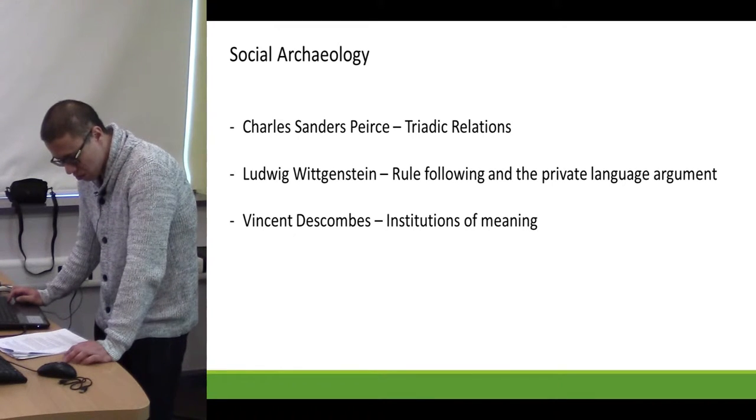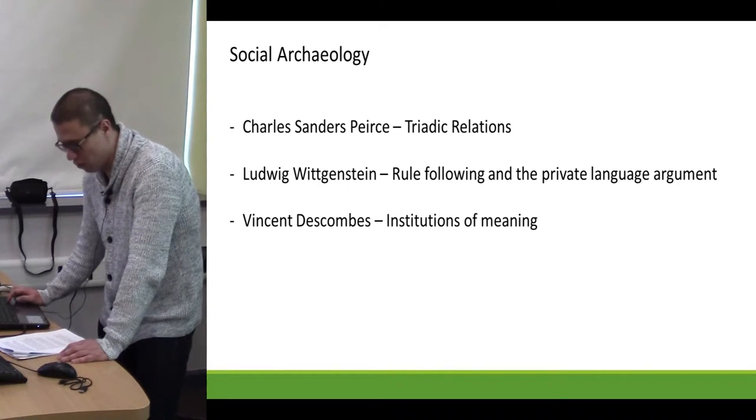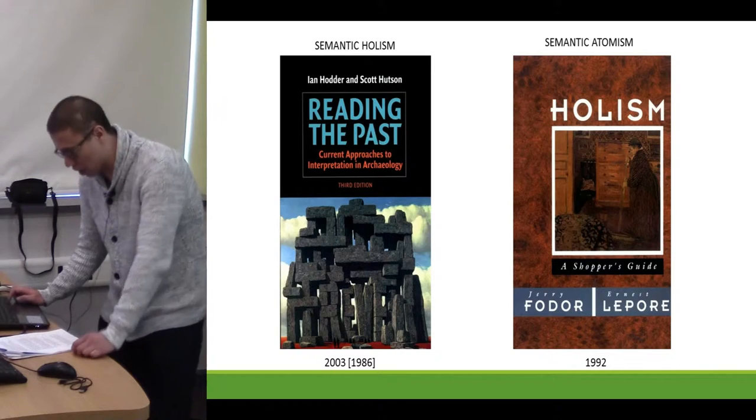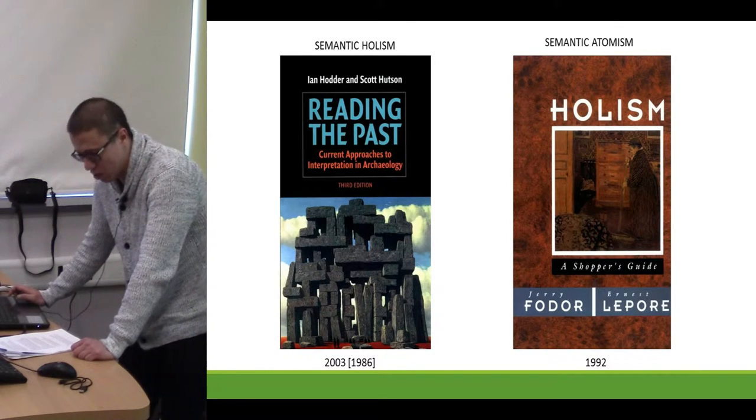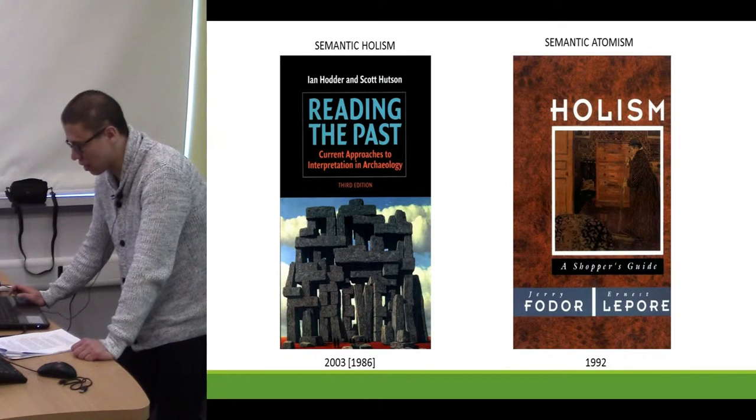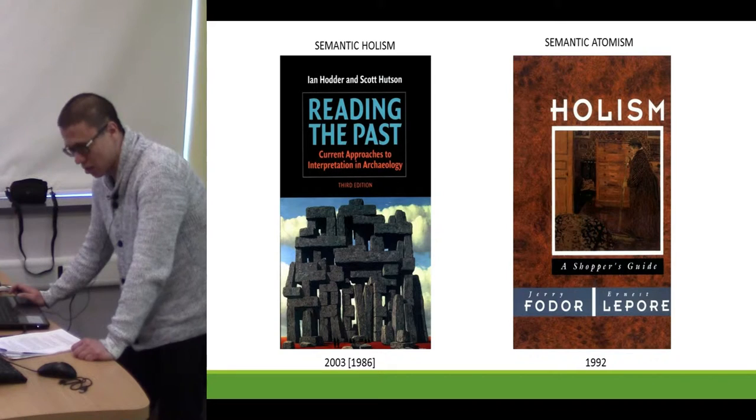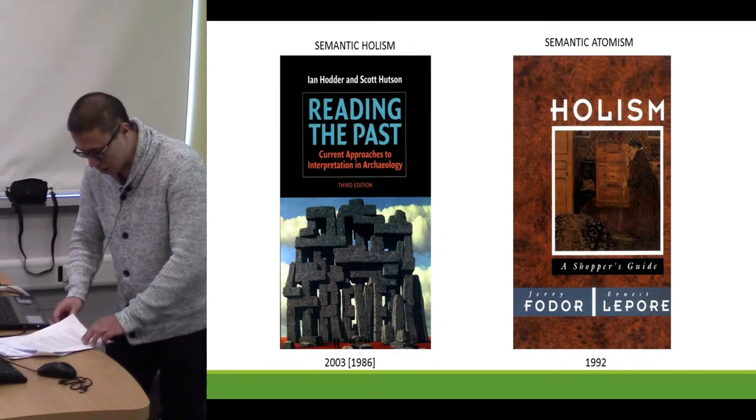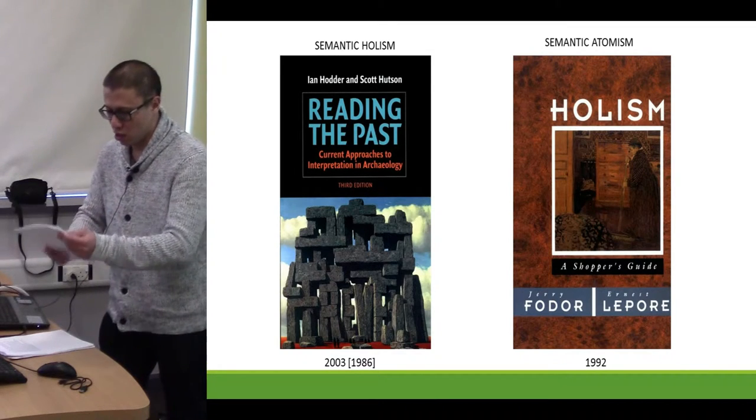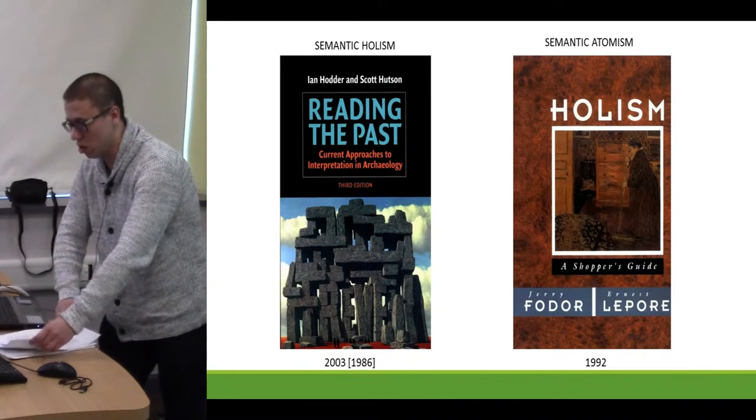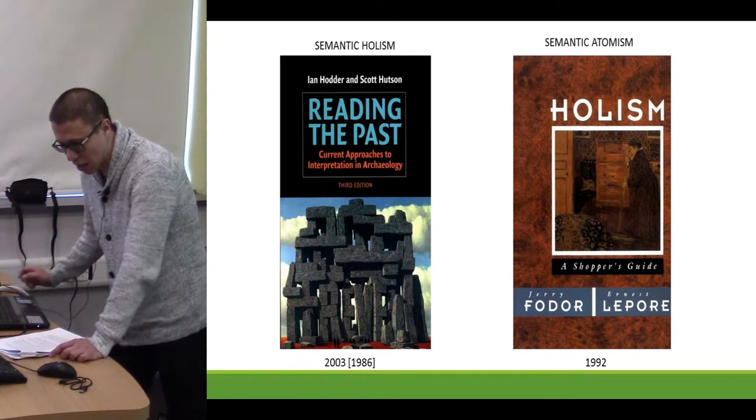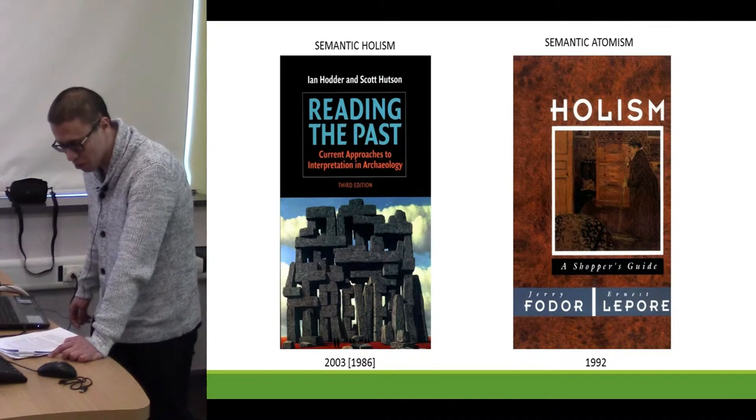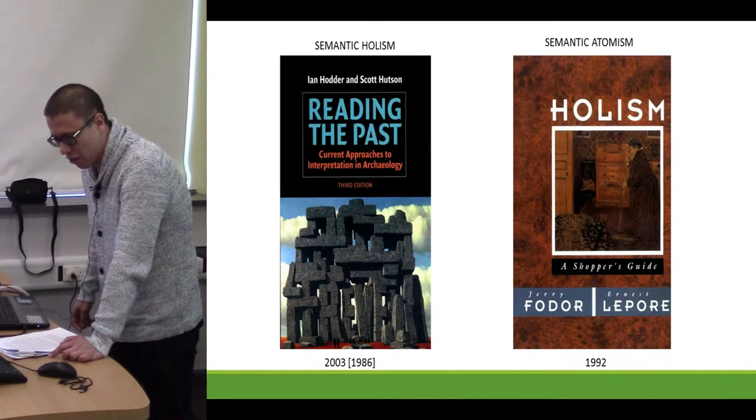With their work in mind, we have Peirce's triadic relations, and to this I add Wittgenstein's notion of rule following, and all of this culminates into Vincent Descombes' institutions of meaning. Now how does all this fit together? Ian Hodder was particularly emphatic on the idea of social meanings. His ideas, however, were partially based on Ferdinand de Saussure's interpretation of linguistics, which stated that the meaning of a sign is derived from its position regarding other signs. This was a form of holism that had to see the whole set of signs.